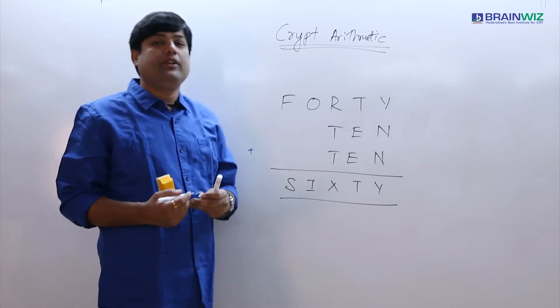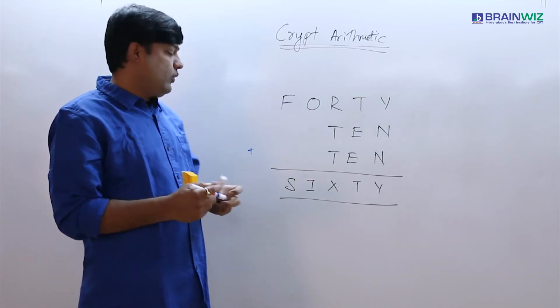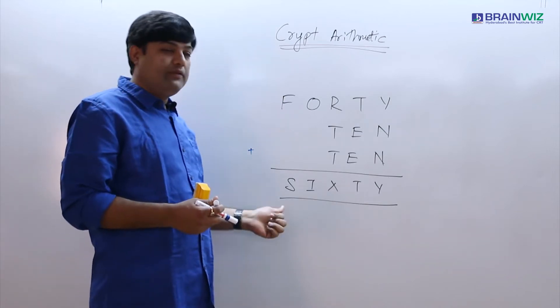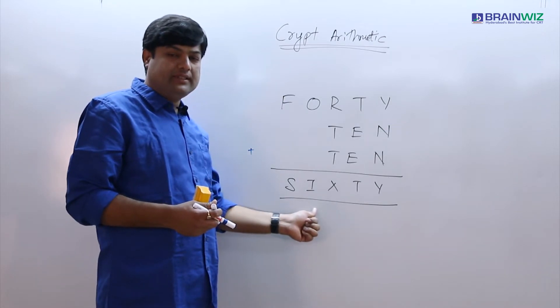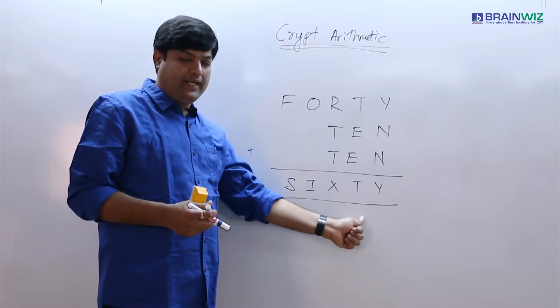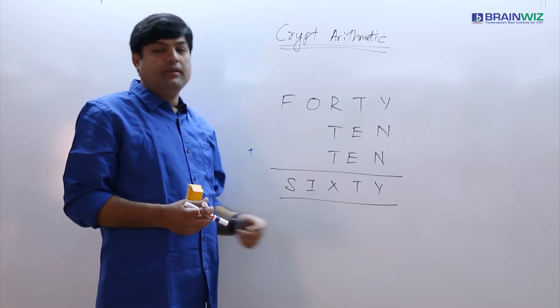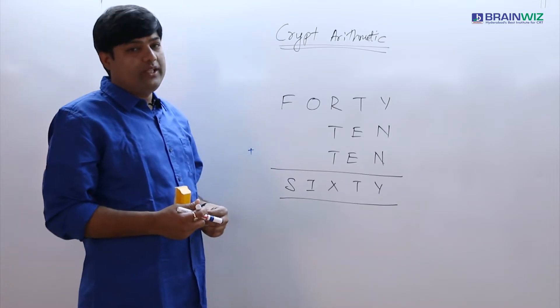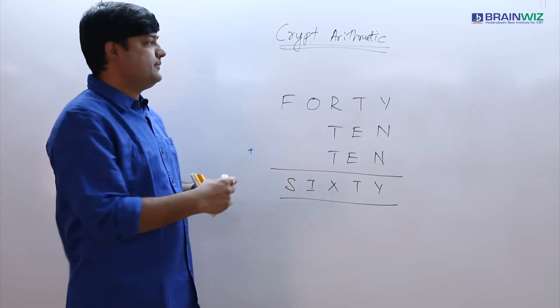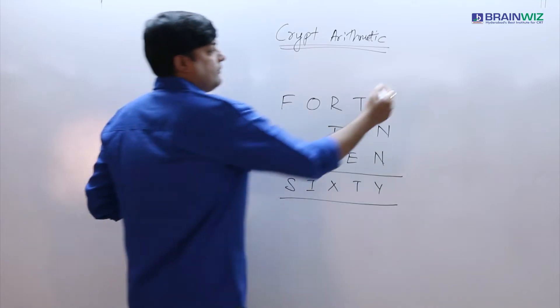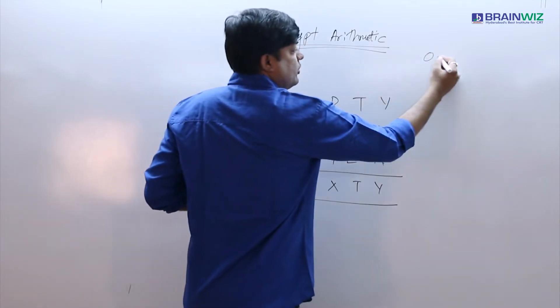We need to find out what is the value of SIXTY — S, I, X, T, Y. We need to use the digits 0 to 9.